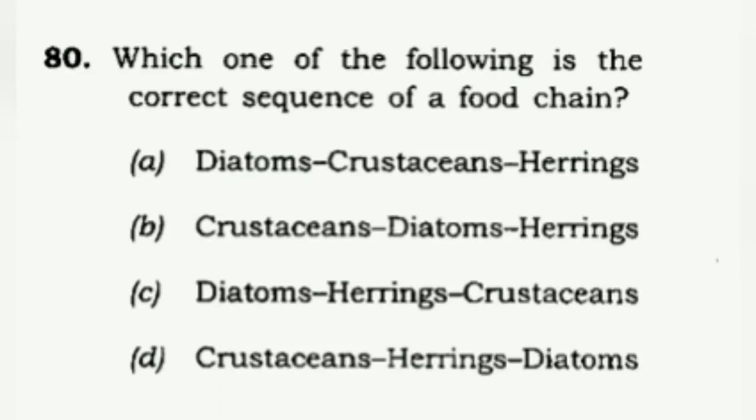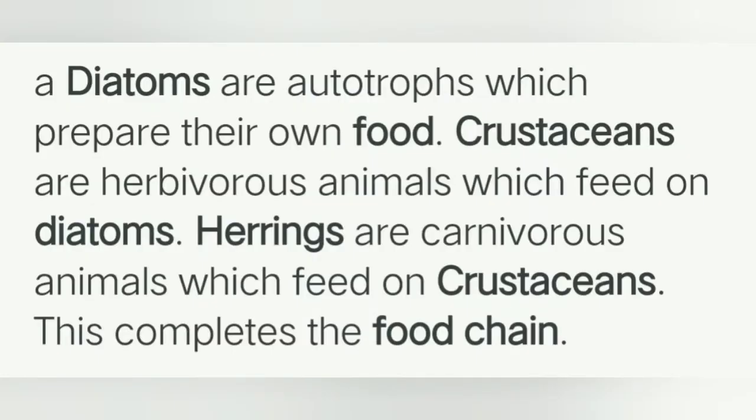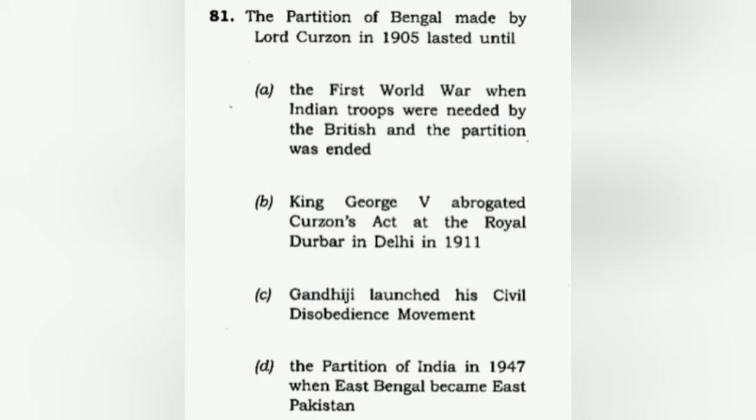Which one of the following is the correct sequence of a food chain? It's not just about knowing what a food chain or food web is — you need to know current examples too. The correct answer is A: diatoms are autotrophs, crustaceans are herbivores feeding on diatoms, and herrings feed on crustaceans. This gives the correct sequence.